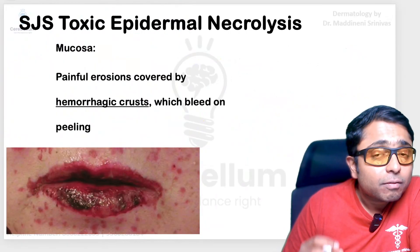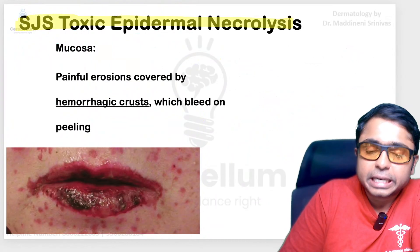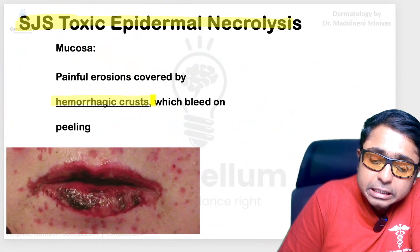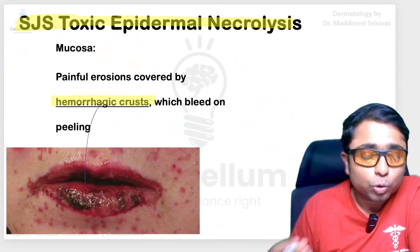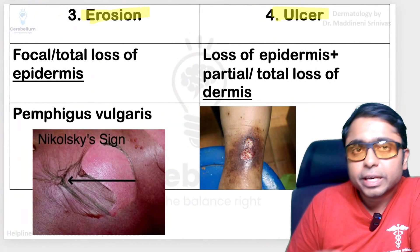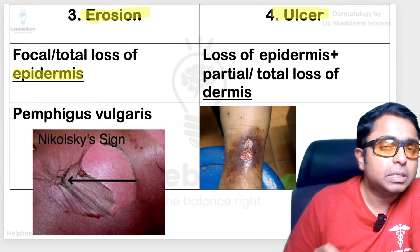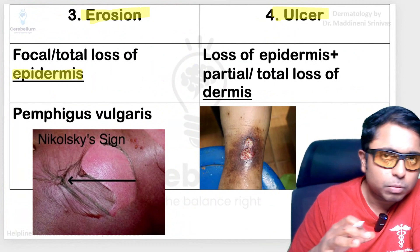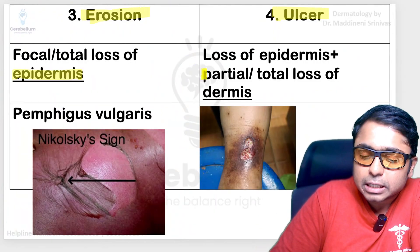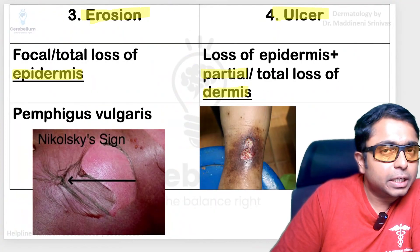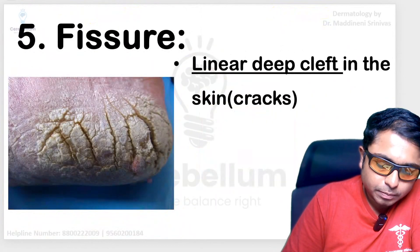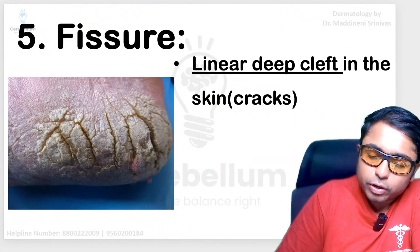In Stevens-Johnson syndrome and toxic epidermal necrolysis, there will be hemorrhagic crust seen classically over the mucosa. Next we have erosion and ulceration. If there is a partial loss of the epidermis, we call it an erosion — as seen in vesiculobullous disorders. An ulcer involves complete loss of the epidermis and partial or total loss of the dermis. There are many types of ulcers — arterial ulcer, venous ulcer.